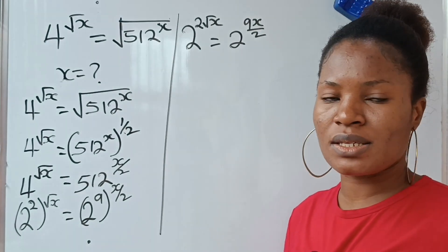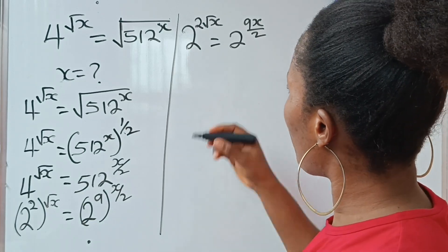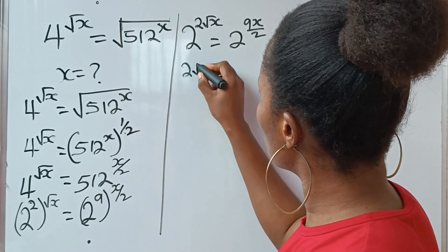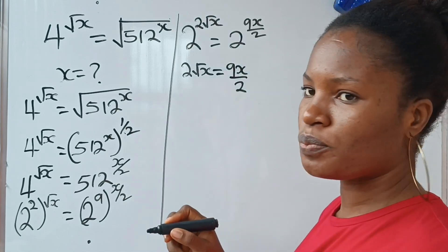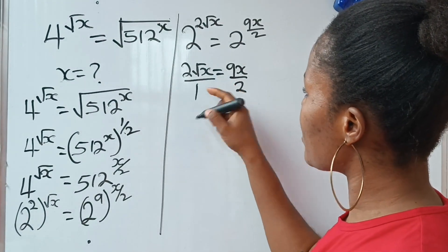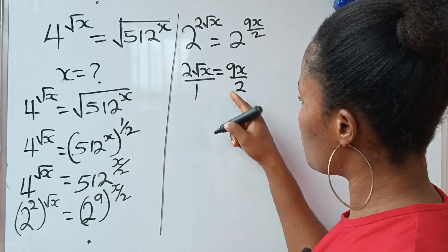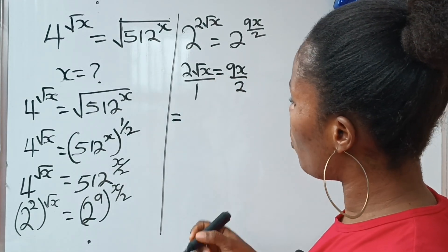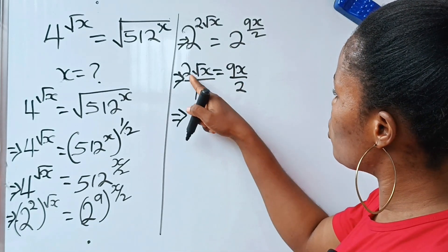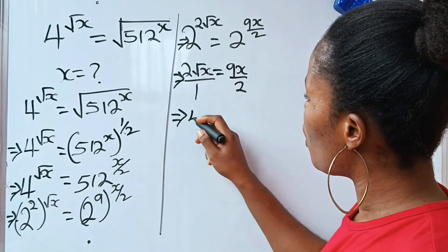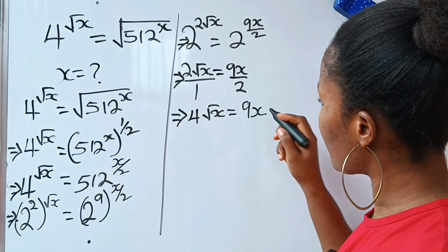Now we have the same base. Let's equate the powers. To equate the powers, we will have 2 root x is equal to 9x over 2. So 2 root x is the same as 2 root x over 1. If we cross multiply, this implies that 2 root x times 2 gives us 4 root x, which is equal to 9x.